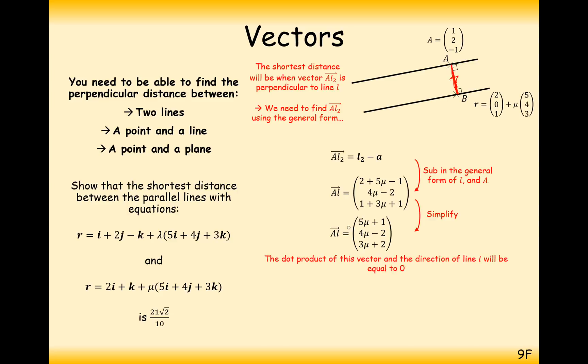So now what we need to do is we need to make sure that this vector here that goes from A to L2 will meet the line L2 at a right angle. And the way we check that is by doing a bit of dot product. So we dot that with the direction vector of L2, expand your brackets and solve for mu. So mu here is going to be minus 3 over 50.